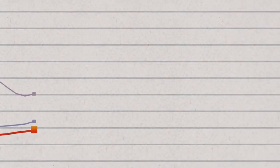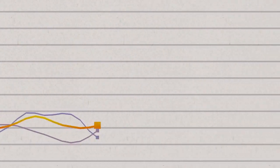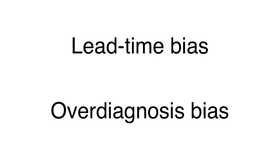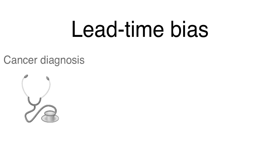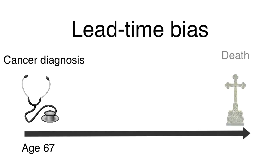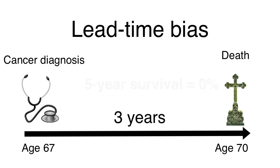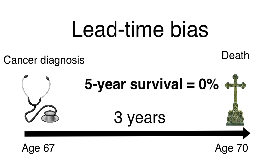There are two methods used to fake five-year survival rates: lead time bias and over-diagnosis bias. Here's how misleading five-year survival statistics can be. Imagine a group of patients get a cancer diagnosis at age 67 because of symptoms. Three years later, they all die at age 70. Each patient survived only three years, so the five-year survival rate for this group was 0%.